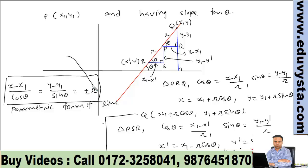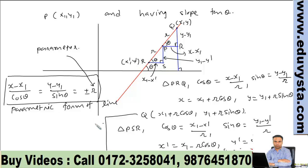Here, r is called the parameter. If we change the values of r, we get different points on this line at different distances from point P. This form of a straight line is helpful in solving many geometrical problems where we can find the required point using this form.